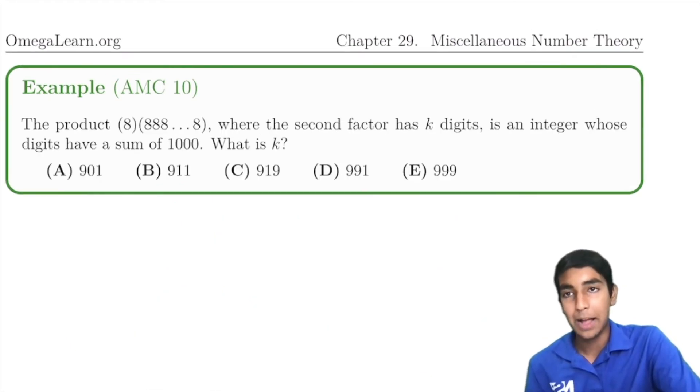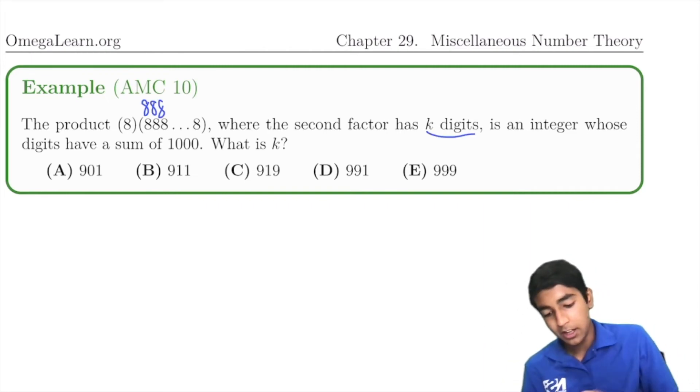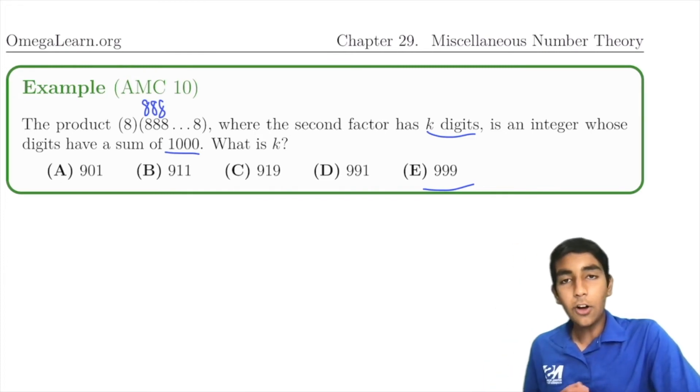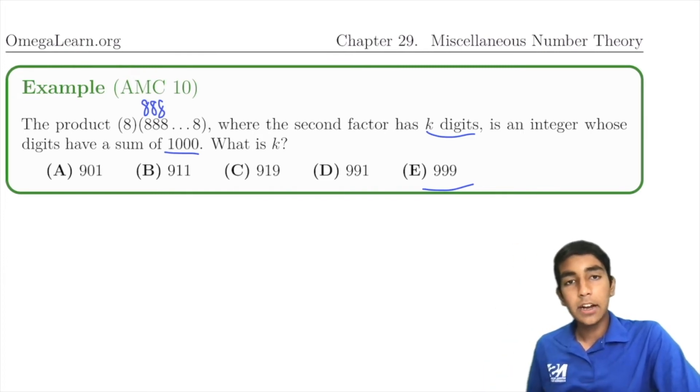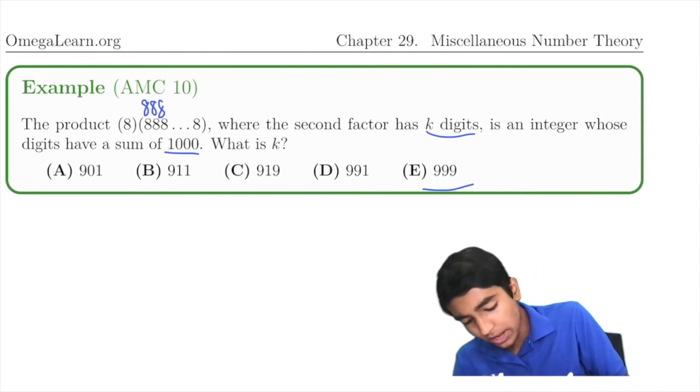Now let's take a look at this cool example. The product 8 × 888...8, where the second factor has k digits. So we don't know how many 8s are here. It could be 1, it could be 2, it could be 999, who knows. Is an integer whose digits have a sum of 1000. What is the value of k? The key thing here is to note that it's 8 times a bunch of 8s. It looks like something that we should try smaller cases for first.